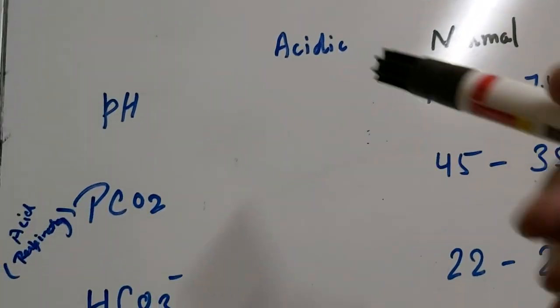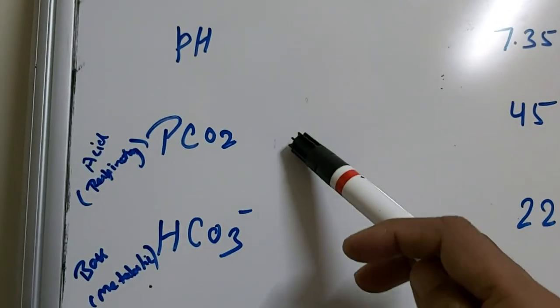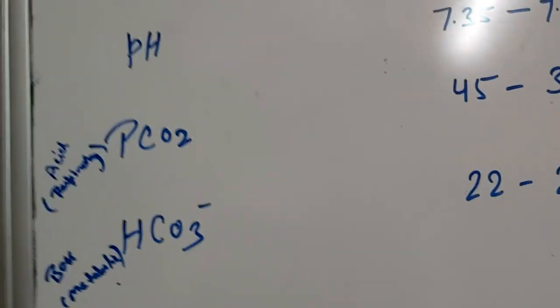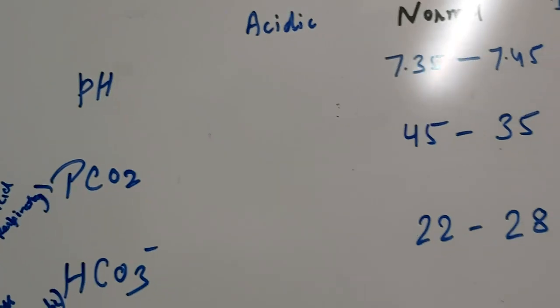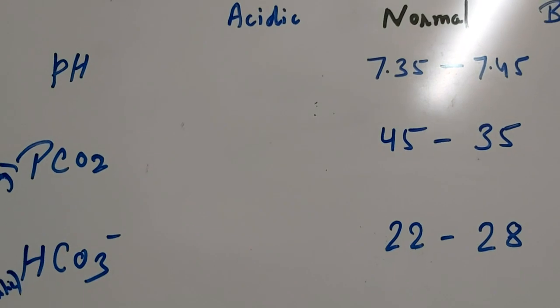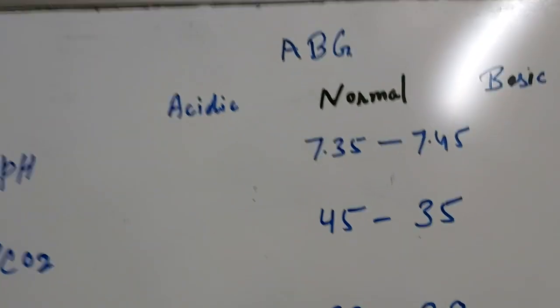The chart usually contains the pH, PCO2, HCO3, partial pressure of oxygen, as well as electrolytes and hemoglobin, and other acids like lactic acid also.